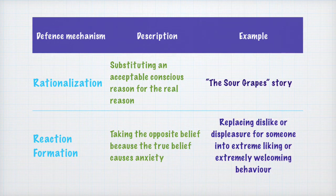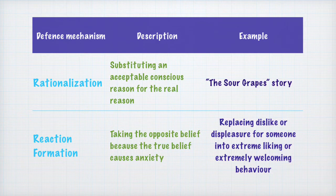Since the reality of not being able to have the grapes is difficult to accept and deal with, the fox rationalizes by saying it's for good that it was not able to have the grapes because they would have been sour and not good for consumption.